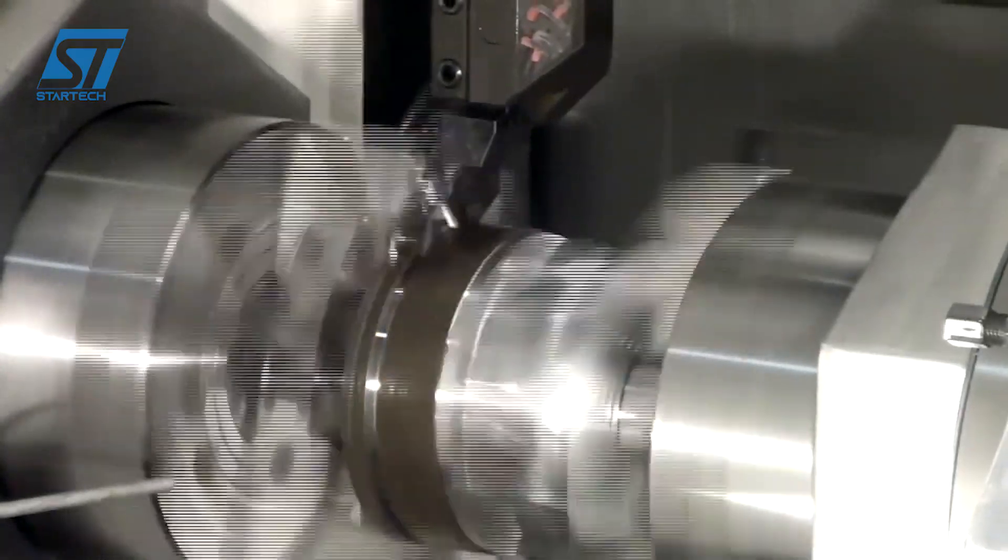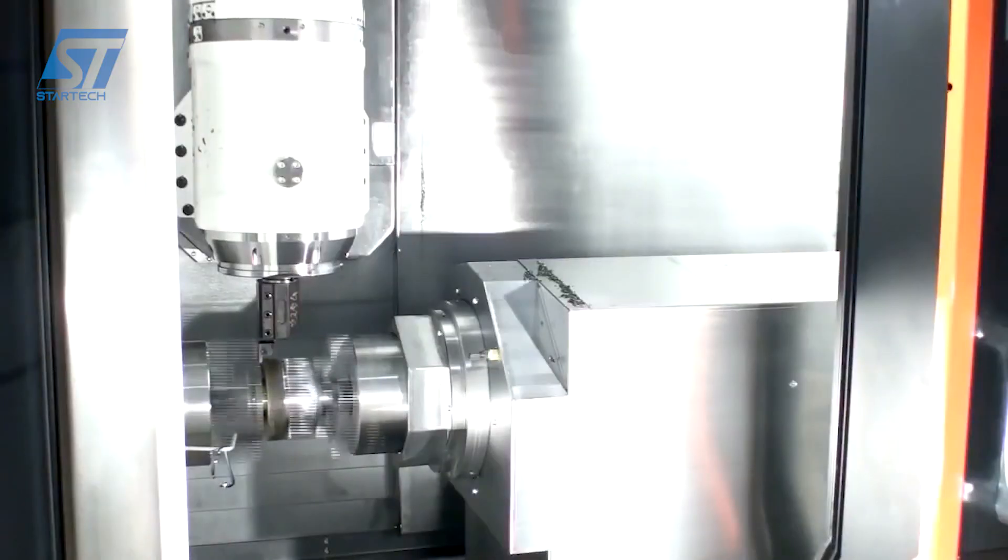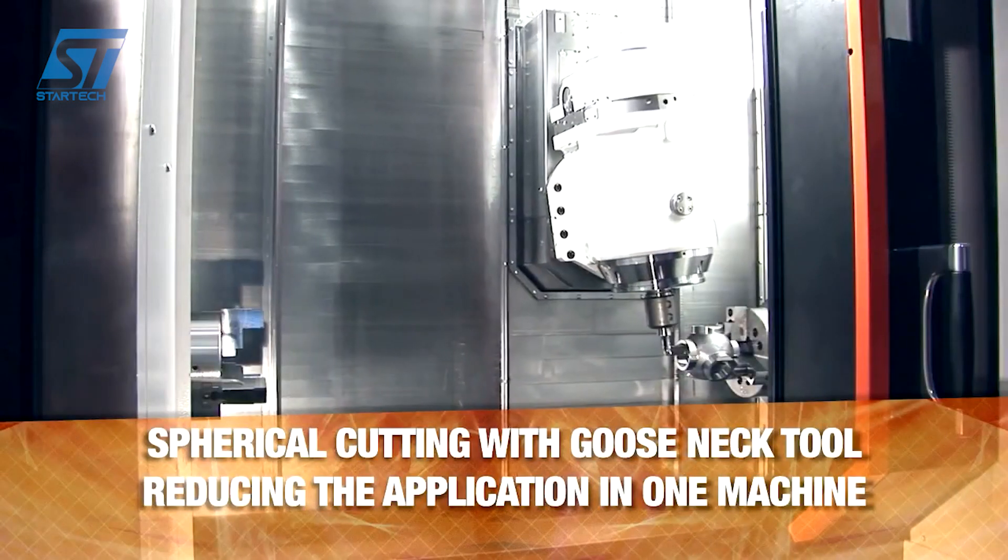The milling spindle, with its B-axis capability, performs milling operations such as contouring, pocketing, drilling, and tapping.